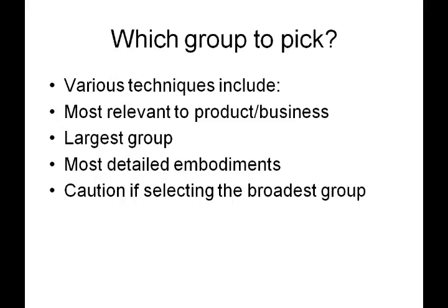Which group should you pick? There are various techniques, which include picking the most relevant group to the product or business that the application pertains to. Another technique is to pick the largest group — the group with the most claims in it. Another technique is to pick the most detailed embodiment, so that you have the most to work with to help get a patent allowed. Use caution if selecting the broadest group, because if the details you need to actually get a patent are in a restricted-out group, you might not be able to get the patent on those broad claims, and you'd be forced to file a divisional application before getting anything.